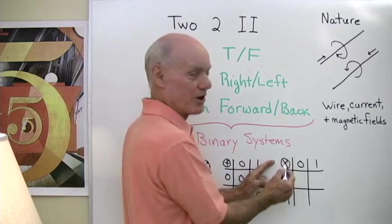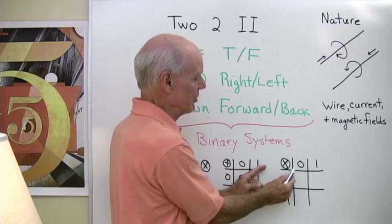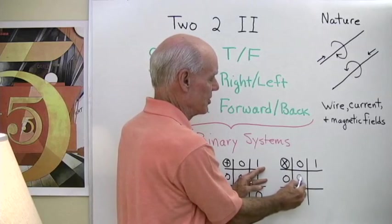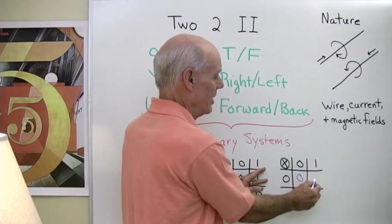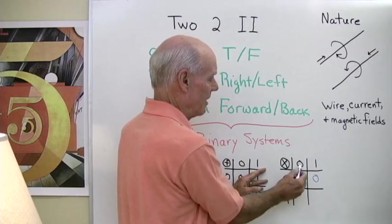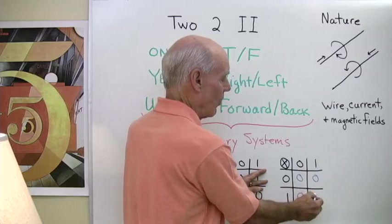Here's the multiplication table with our circle multiplication. Zero times zero is going to be zero, zero times one, zero, one times zero, zero, and one times one, one.